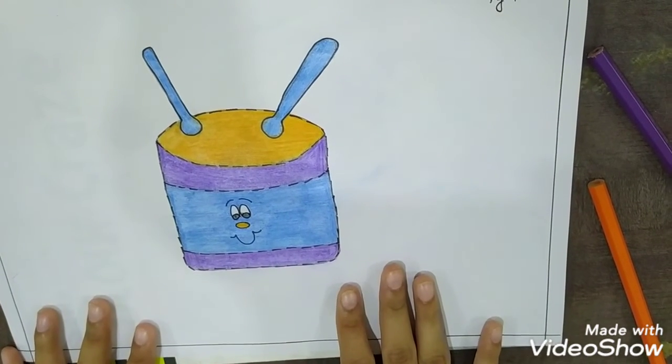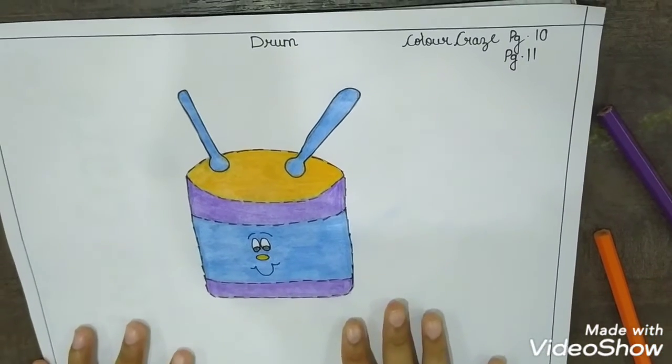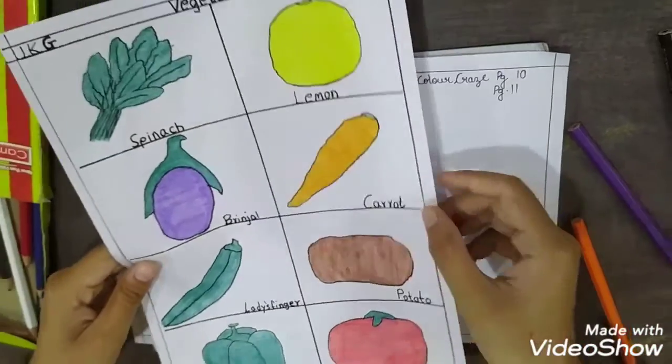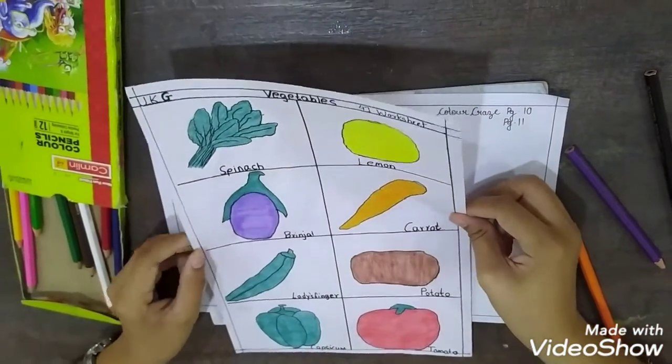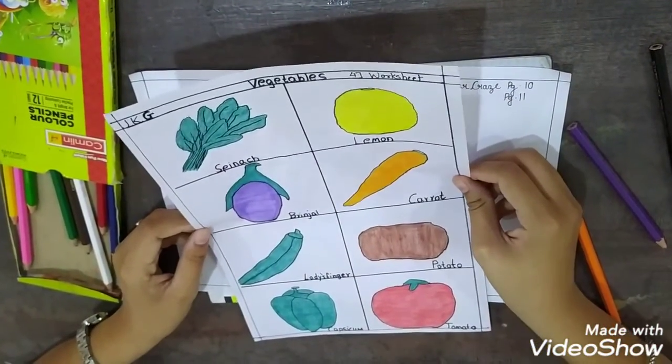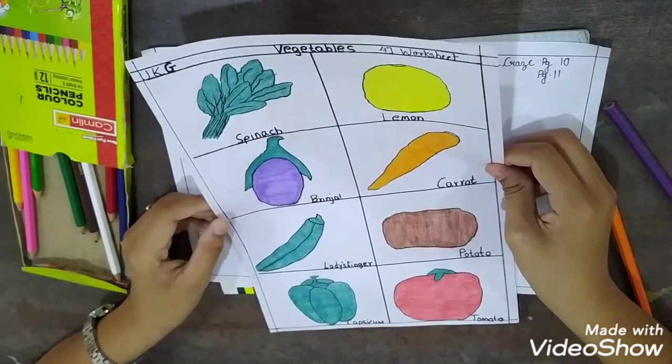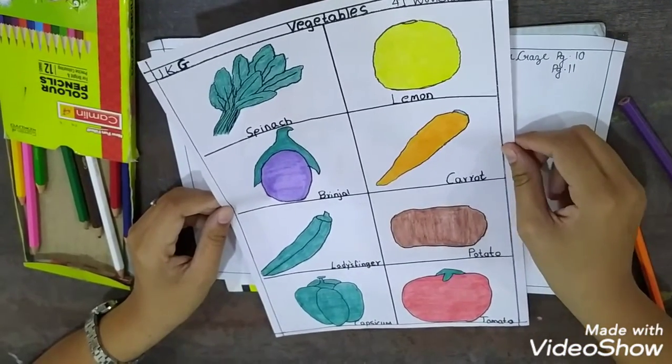So this is today's homework. Page number 10 and page number 11. And we have given one more coloring sheet. The folders which we had given to you. But many of you haven't collected it. The month of August folders.